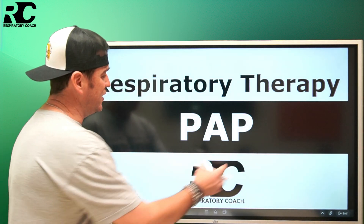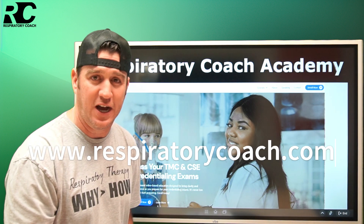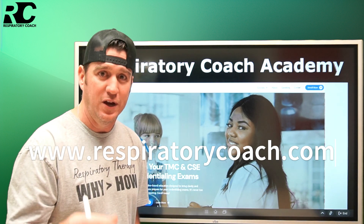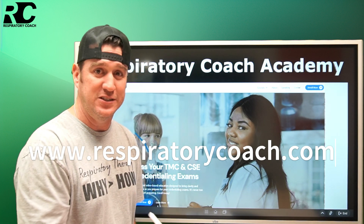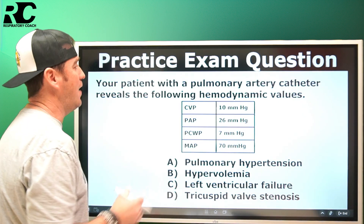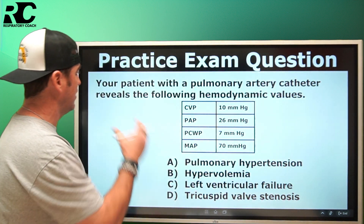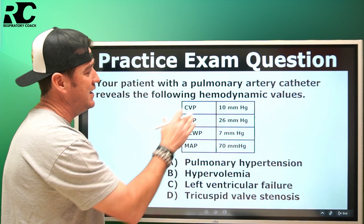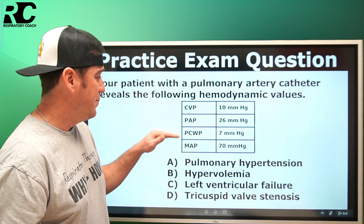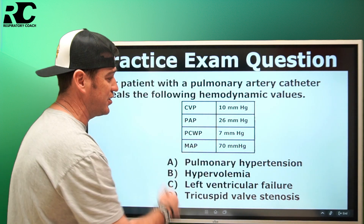We're talking all about pulmonary artery pressure. We're going to start off with an exam question. Your patient with a pulmonary artery catheter reveals the following hemodynamic values: CVP, PAP, pulmonary capillary wedge pressure, and MAP — mean arterial pressure — and then you've got your answers.